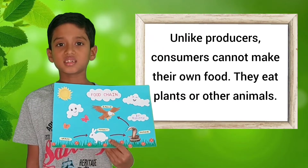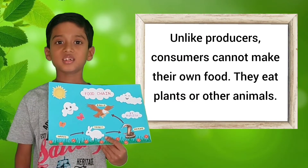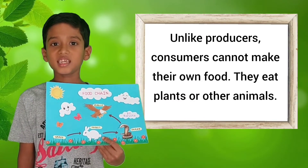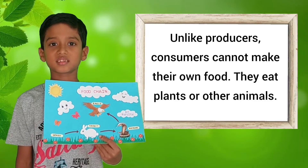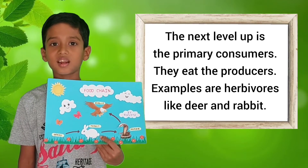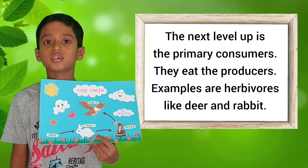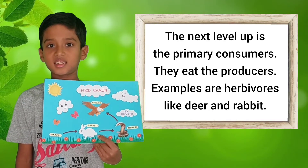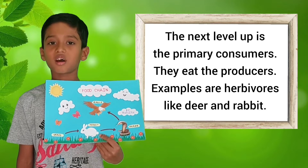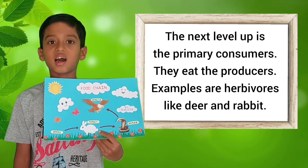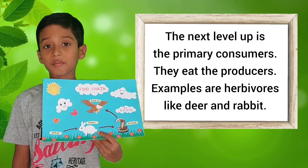Unlike producers, consumers cannot make their own food. They eat plants or other animals. The next level up is the primary consumer. They eat the producers. Examples of primary consumers are deer and rabbit.